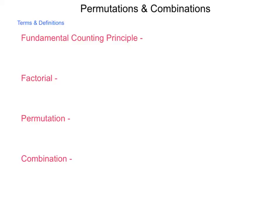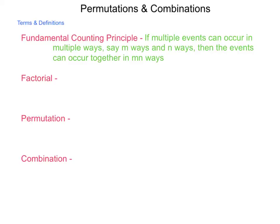Let's begin at the start: the Fundamental Counting Principle. The fundamental counting principle is, if multiple events can occur in multiple ways, say M ways for the first event and N ways for the second, then the events can occur together in M times N different ways. Example of this, if you are getting dressed in the morning and you have three pairs of clean pants and five shirts, then you have three times five, 15 different outfits. That is Fundamental Counting Principle.